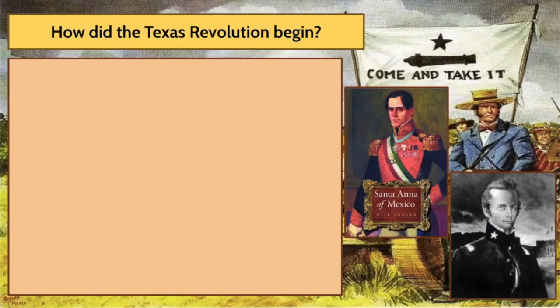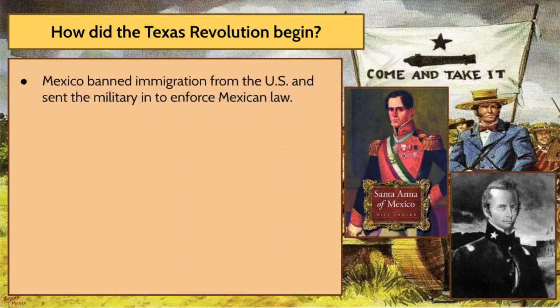There is something called the Texas Revolution. The Texans finally revolted against the Mexican government. How did the Texas Revolution begin? Mexico banned immigration from the United States and sent the military in to enforce Mexican law. Eventually the Mexican government had enough — they saw what was coming and took steps to get the situation under control, including banning immigration and sending in the military.